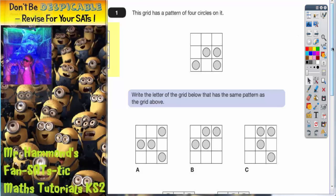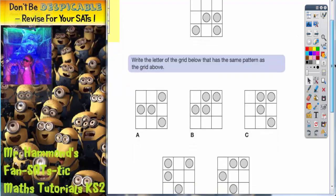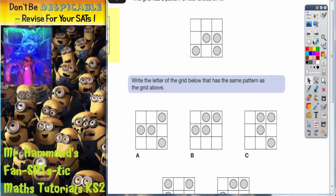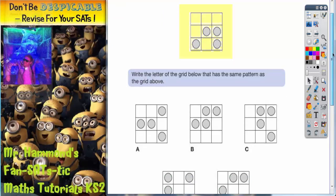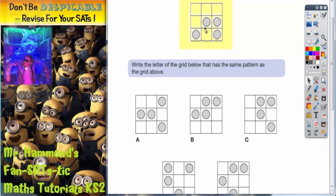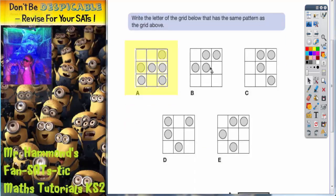Now some of you may be able to do this just by looking at it, but if you can't, what I suggest you do is get a piece of tracing paper which you should have access to. Trace the grid and trace the circles, and then all you've got to do is get your tracing paper, stick it over each of the five grids in turn and rotate it to see when it fits.